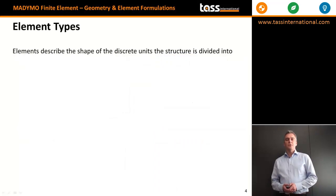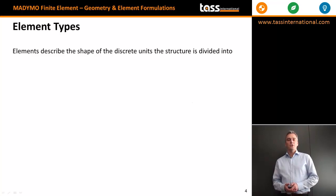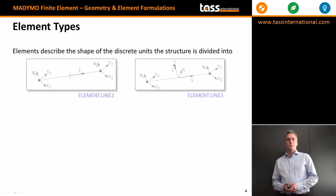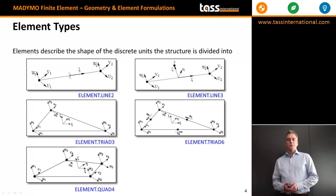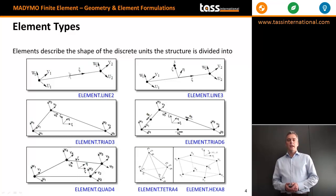Element types describe the shape of the discrete units that a structure is divided into. Your solid structure is divided into small elements, and the type sets the element shape. For 1D elements, we have element line2 and element line3 — two-node and three-node elements. For 2D shapes, we have element triad3, triad6, and quad4 — three-node, six-node, and four-node elements. For 3D elements, we have element tetra4 and element hexa8, which are four-node and eight-node solid elements.